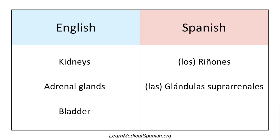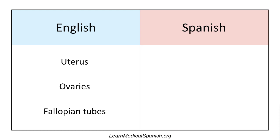Bladder. La vejiga. La vejiga. Uterus — there's more than one way to say this, but we'll just do the one that sounds the same, that's a cognate. El útero. El útero. Just like in English there are words like 'womb' that mean the same thing basically, but we'll just stick with that for now.